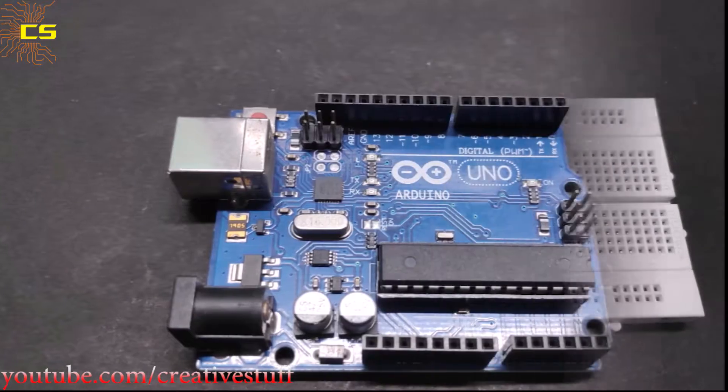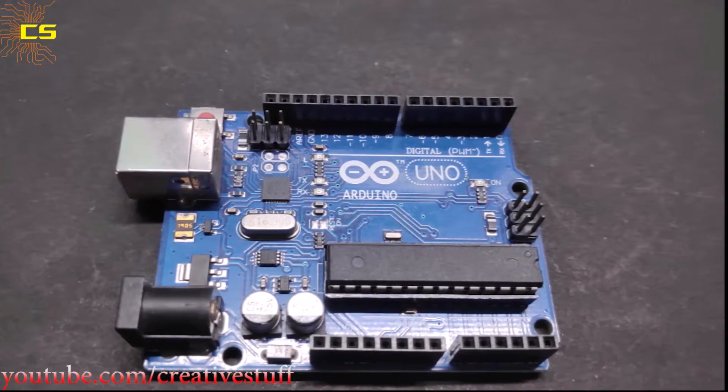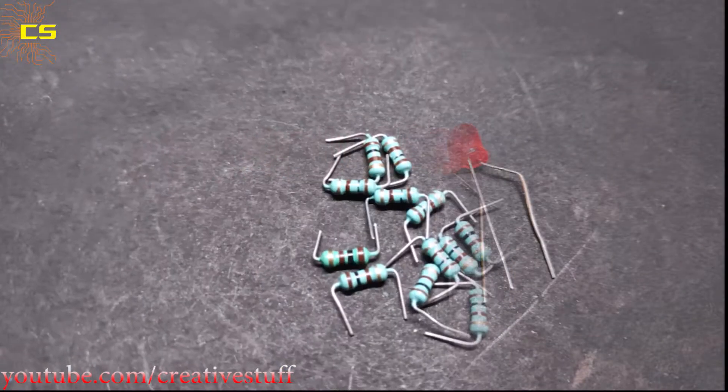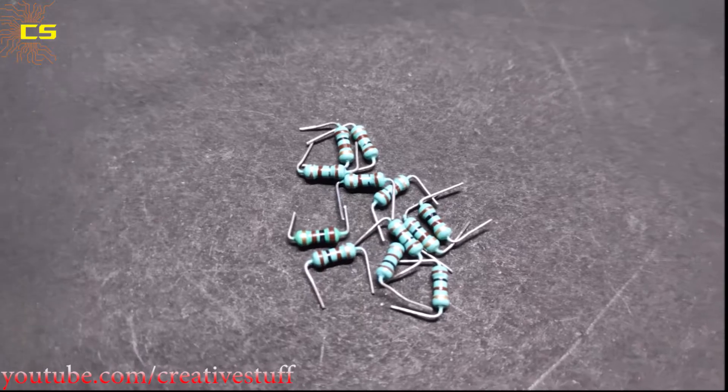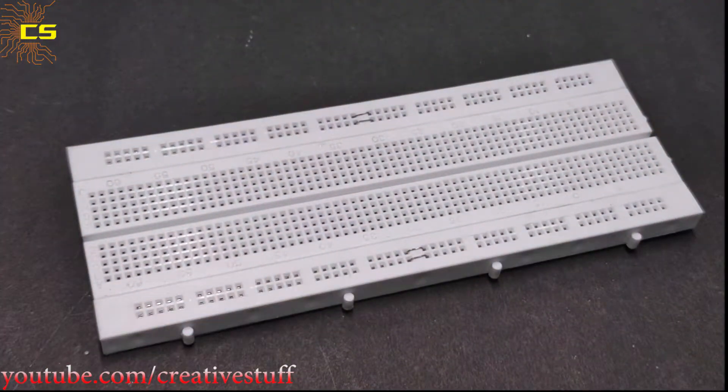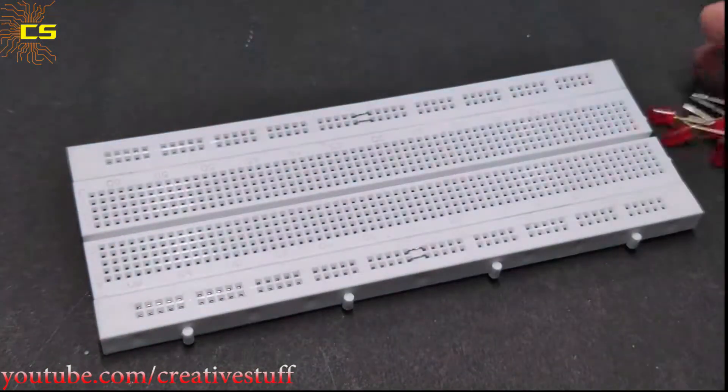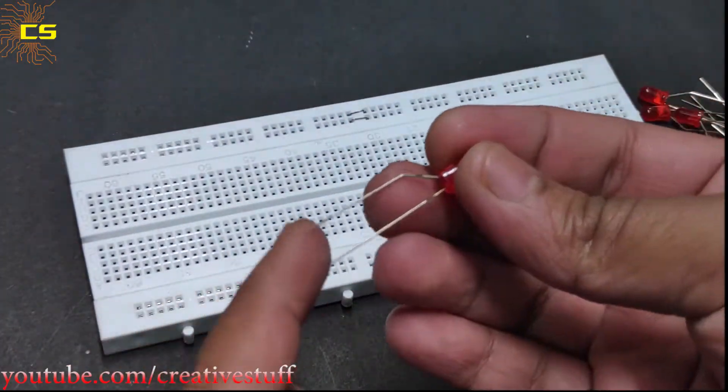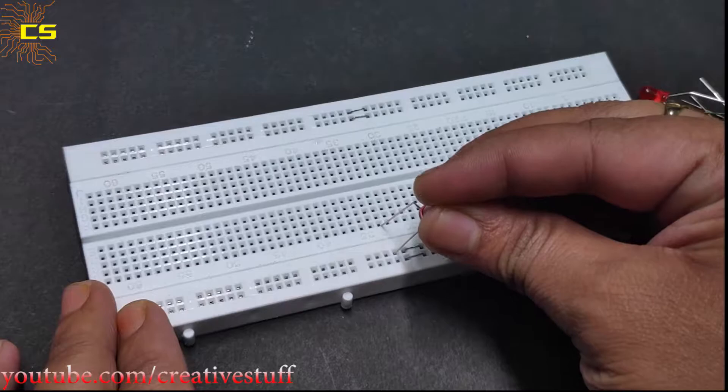...breadboard, one Arduino Uno, 12 LEDs, 12 200-ohm resistors, and some connecting wires. First, put the LEDs on the breadboard such that all the LED negatives are connected together, and the LED positives are connected to free pins of the breadboard.